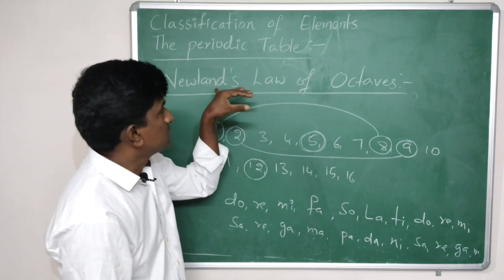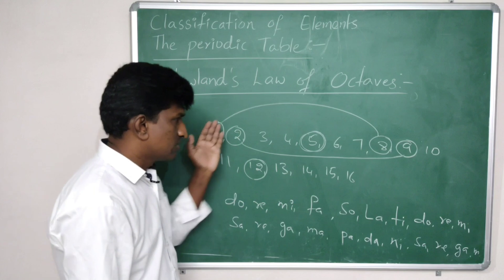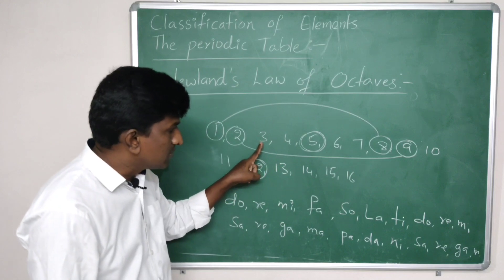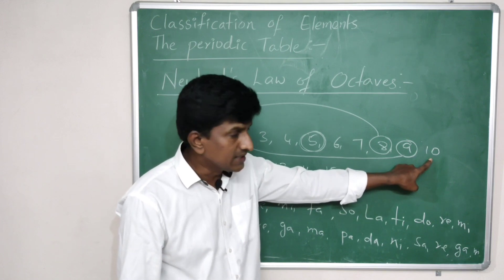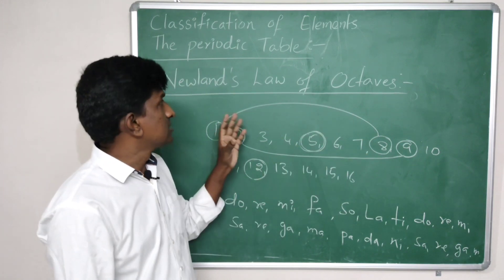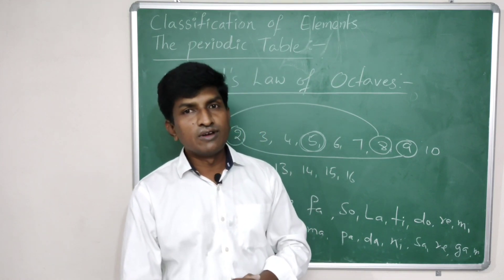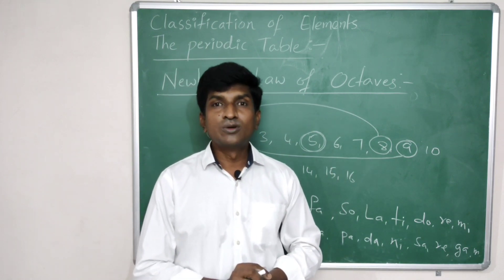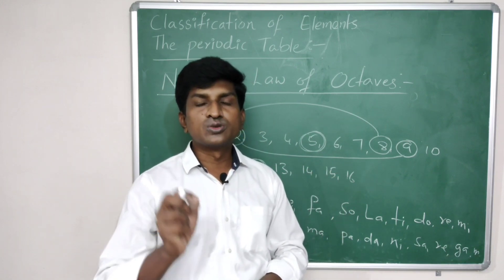This is John Newlands' octaves. Newlands divided all available elements into 7 groups. Newlands was also the first scientist to assign atomic numbers to elements. For example, lithium is the 2nd element, sodium is the 9th element, and potassium is the 16th element — sodium and potassium both show similar properties to lithium. Similarly, magnesium is the 10th element and calcium is the 17th element, showing repeating properties.